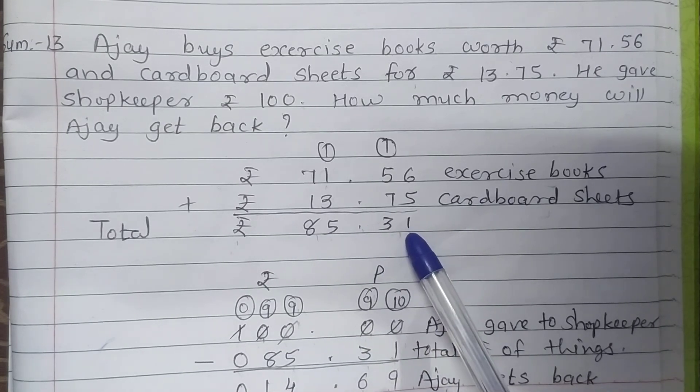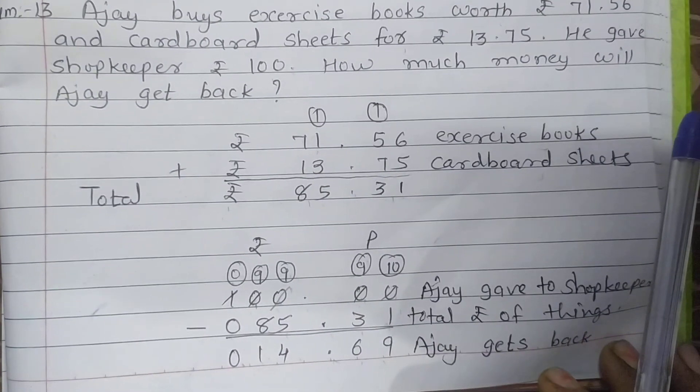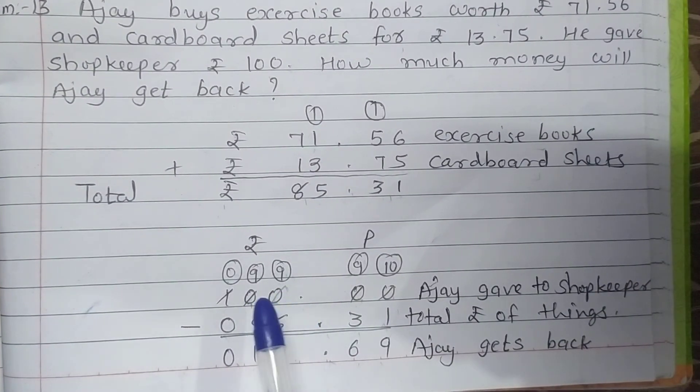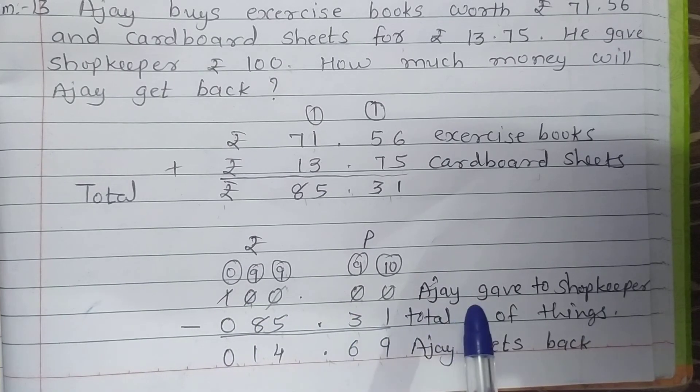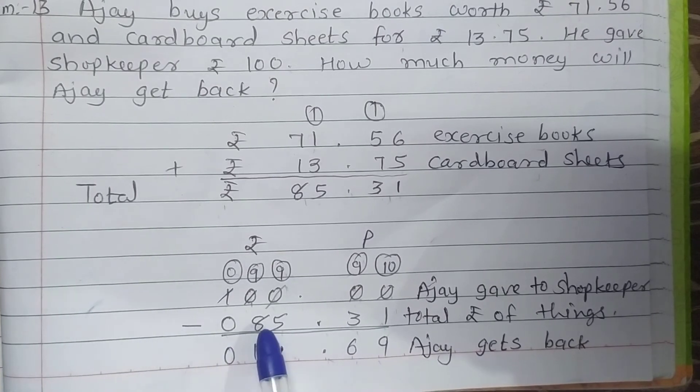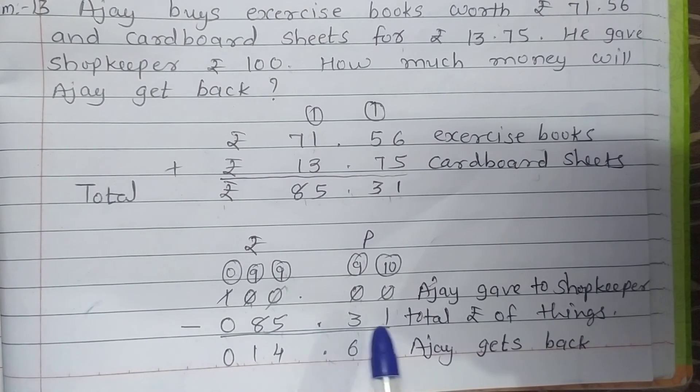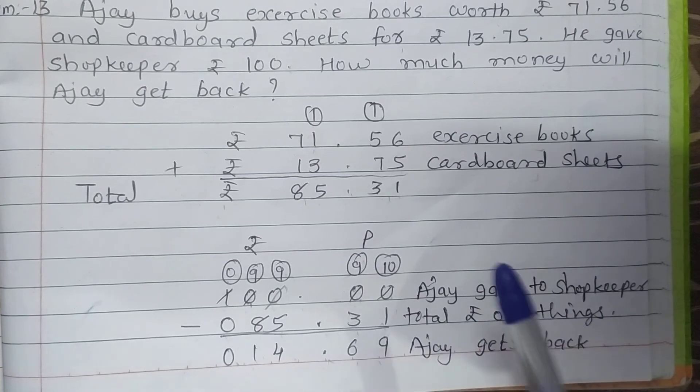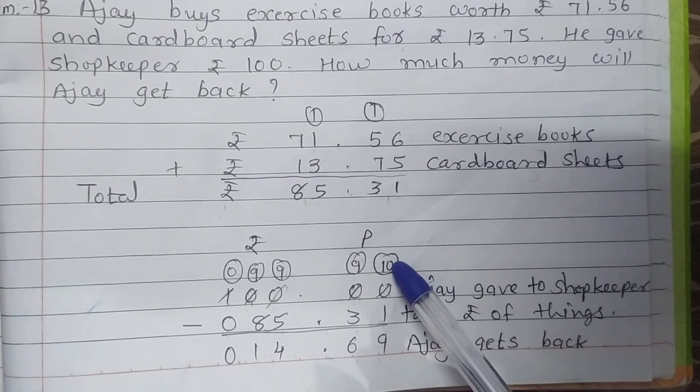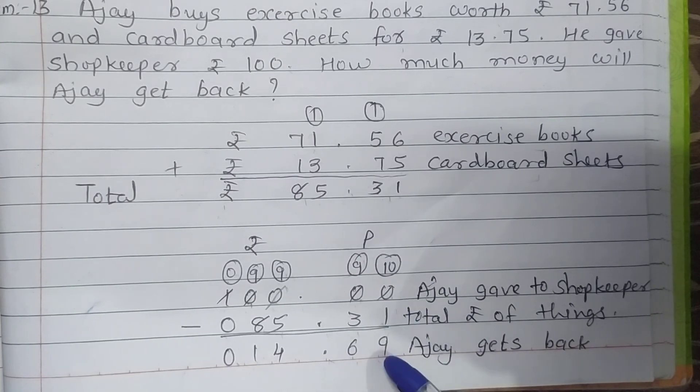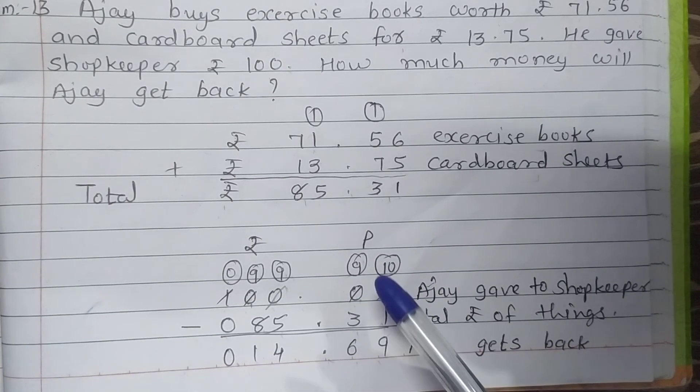Now students, how much money he gave to the shopkeeper? 100, right. So 100.00 Ajay gave to shopkeeper. Now minus 85 rupees 0.31, total rupees of things. Now subtract: 0 minus 1 is not possible, take 10 borrow.